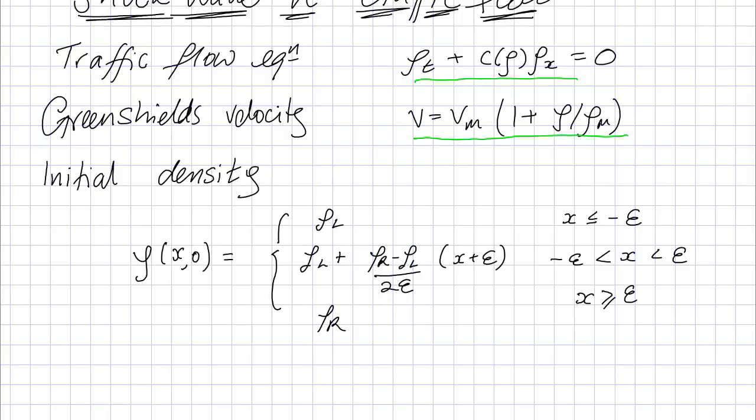So when x is less than epsilon zero, that's this line here, I've got one value, that's rho_l for the density. When x is greater than epsilon, I've got another value, that's rho_r. And then in between, I've got a linear function interpolating between the two.